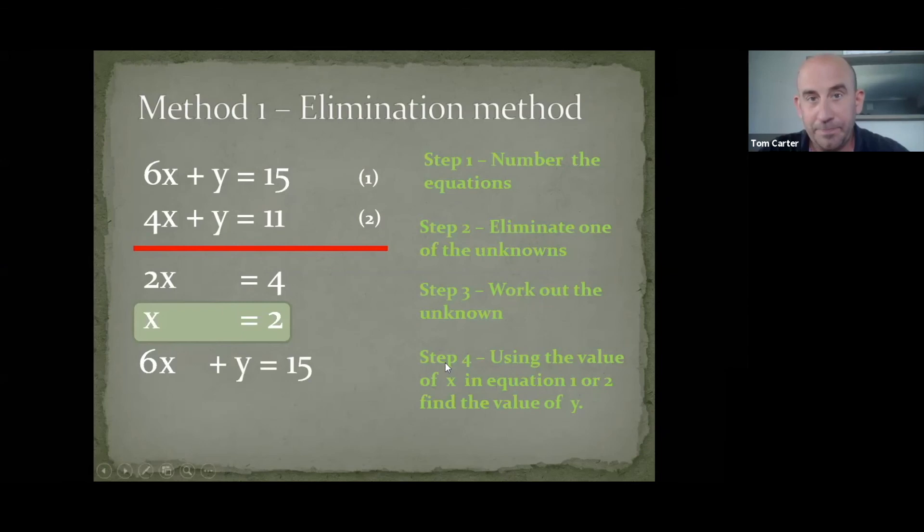Right, so I'm going to put it back into the first one. So, I've just rewritten that first equation then. Now, if I put x as 2 into that first equation, I'll get 6 times 2, which is 12. And then plus y is 15. So, 12 plus something is 15. That something must be 3. And that's the solution to those two straight lines. Like I say, if you plot it at 2, 3, so along the corridor to 2 and up to 3, that would be the point where they cross.